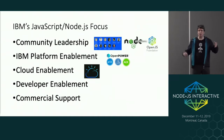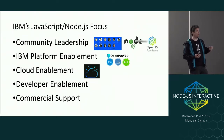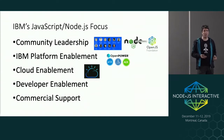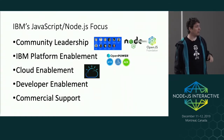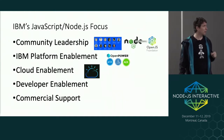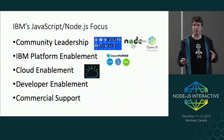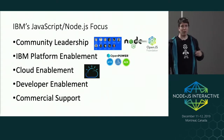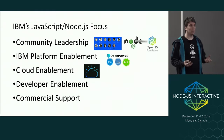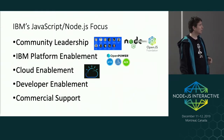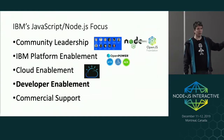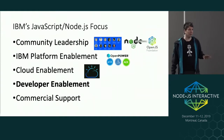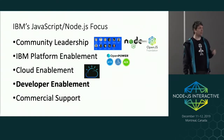IBM is involved in Node.js in a number of ways. We're very active in the community — we have 11 core collaborators, four people on the technical steering committee. We work hard to make sure you get good Node support on our platforms, and that deploying to public or private cloud is a great environment for Node applications. We also work on developer enablement and offer commercial support for production.